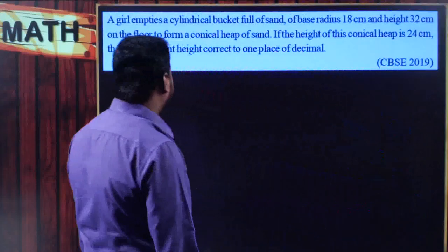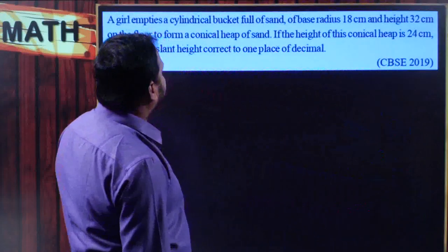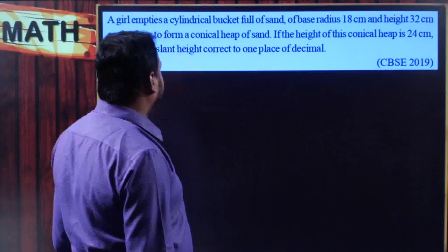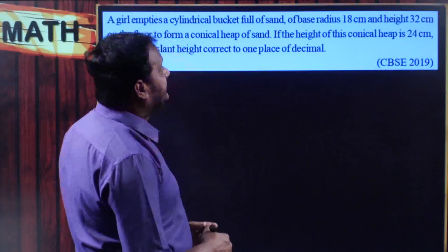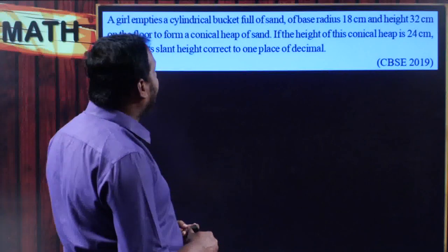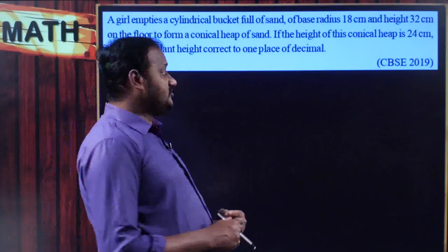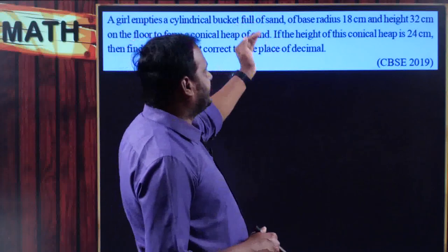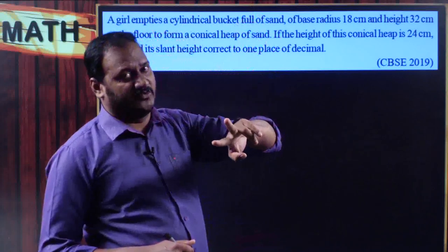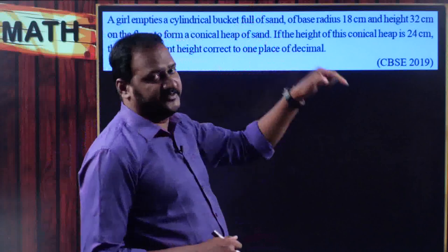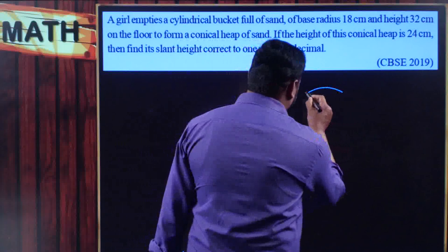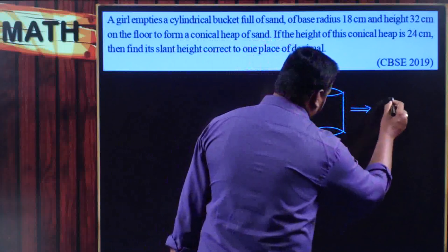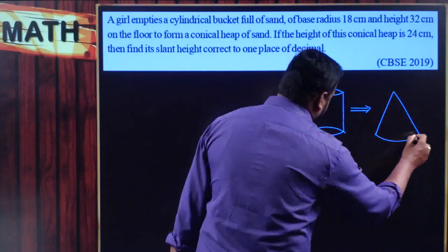Moving on to the next problem: a girl empties a cylindrical bucket full of sand of base radius 18 centimeters and height 32 centimeters on the floor to form a conical heap of sand. If the height of the conical heap is 24 centimeters, find its slant height correct to one place of decimal. Here a cylinder is transformed into a cone - that is what you need to understand. There is a cylinder full of sand emptied on the ground to form a conical heap.